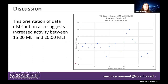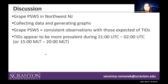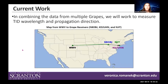I then plotted all of that data on a graph to see a different orientation. On the left-hand side we have the observed hours, and on the bottom the midpoint local time in the central time zone. This orientation of data distribution also suggests increased activity between 15:00 and 20:00 midpoint local time. So far, the GRAPE at northwest New Jersey is actively collecting data, making observations consistent with TIDs, and TIDs appear to be more prevalent during 15:00 to 20:00 midpoint local time.